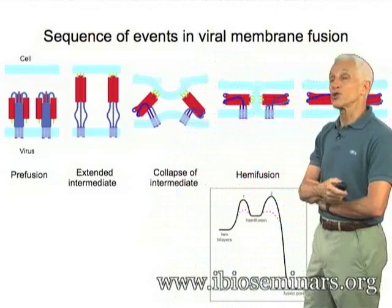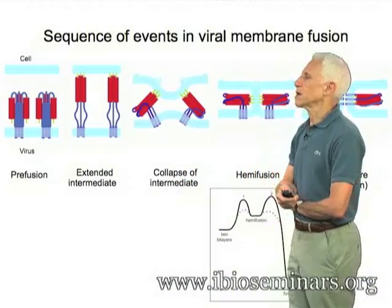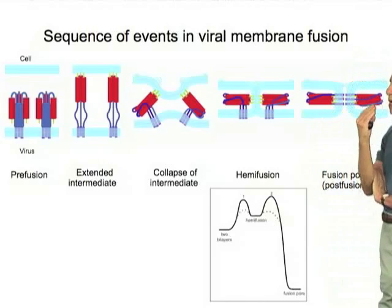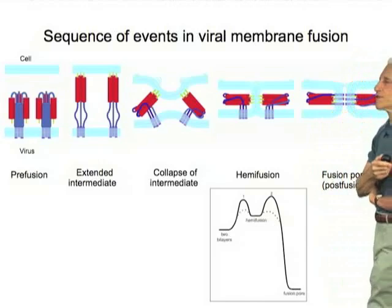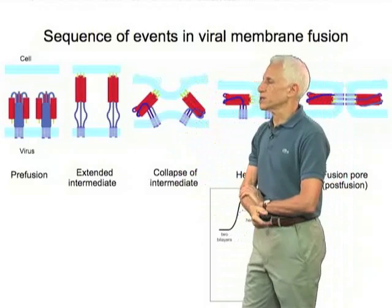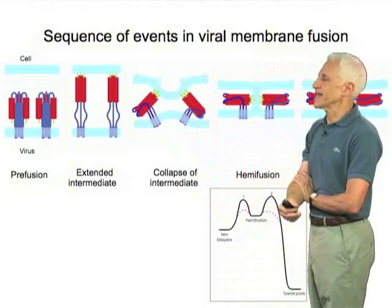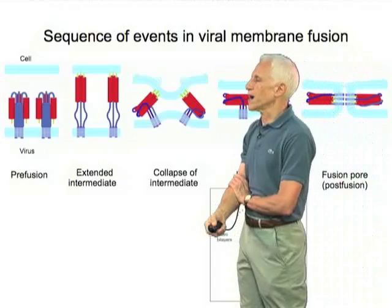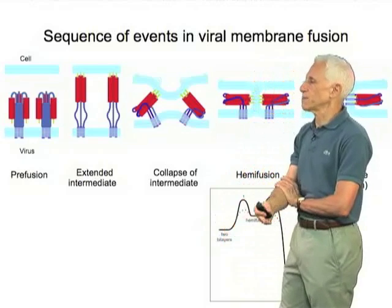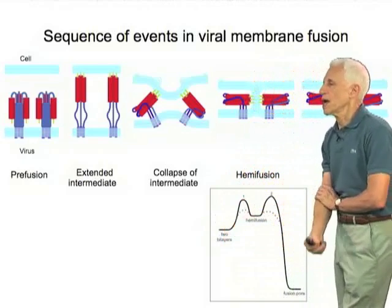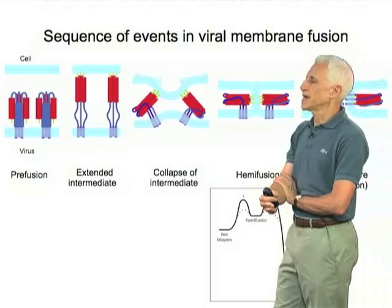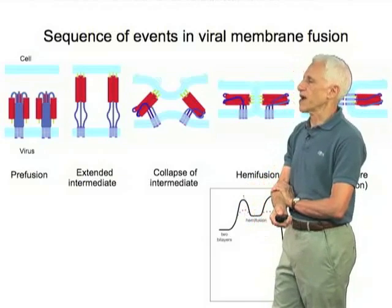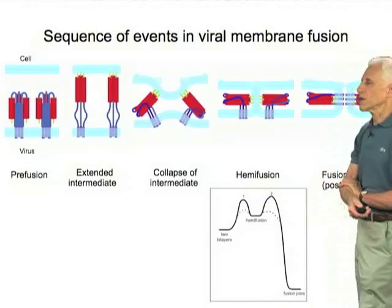That extended intermediate, which is transient, then collapses into a structure that is ultimately stable for the fusion protein and drags the two membranes together. As I suggested, there are probably kinetic barriers from the point of view of the lipid bilayer itself — both between the two-bilayer state and the hemifusion state, and between the hemifusion state and the final formation of a fusion pore — and it is the role of the fusion protein to lower that kinetic barrier, as suggested by these dashed red lines.